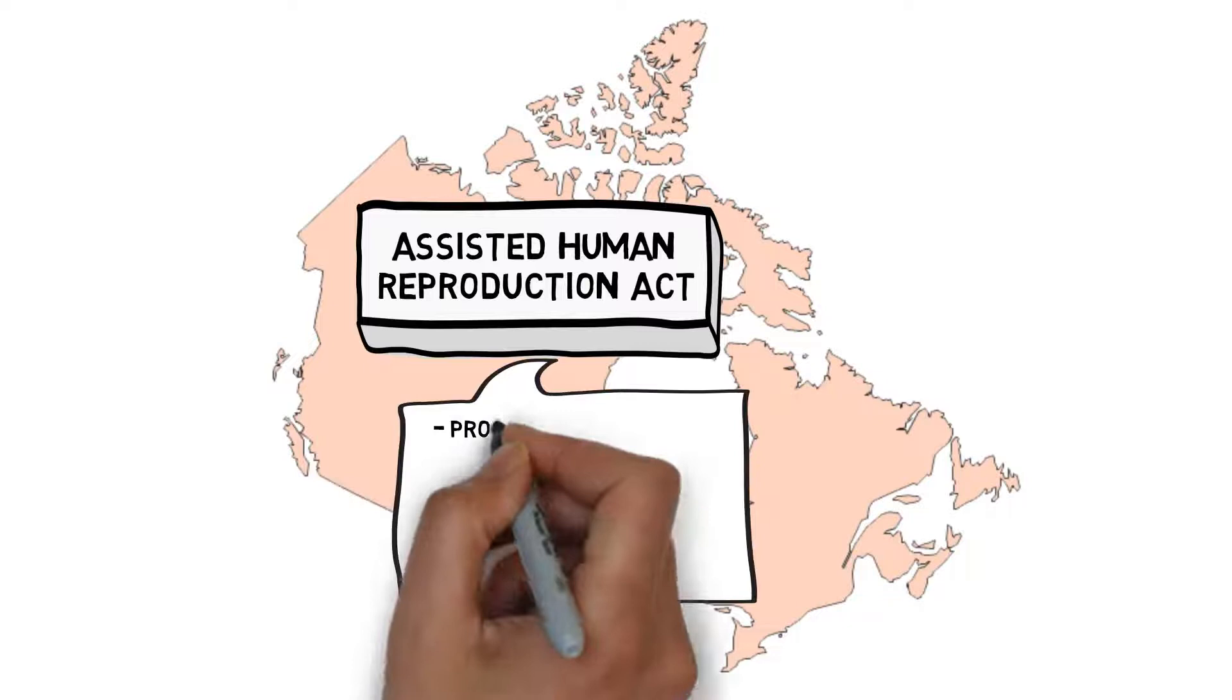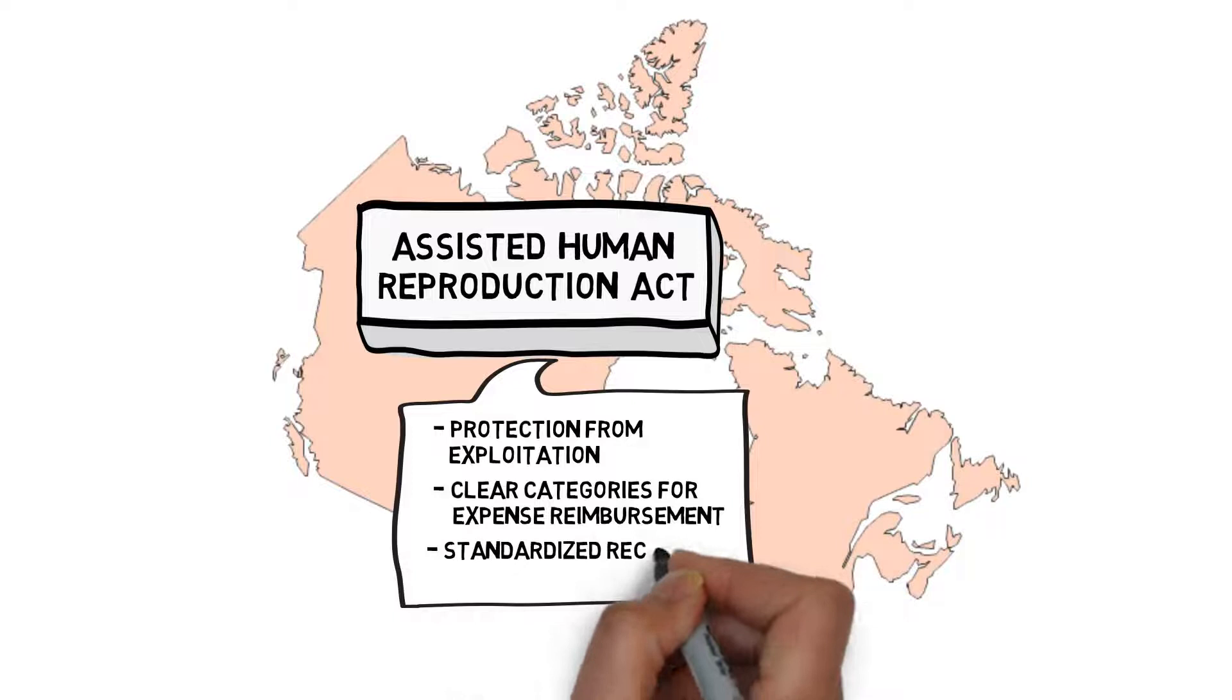This year, the Government of Canada is drafting new regulations to strengthen the 14-year-old Assisted Human Reproduction Act, and surrogacy is on the agenda.